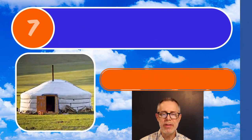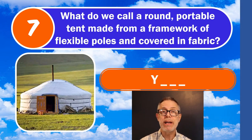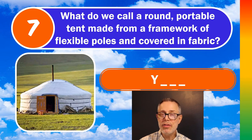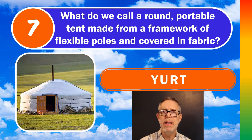Let's take a look at question number seven. What do we call a round, portable tent made from a framework of flexible poles and covered in fabric? The answer is Yurt. This particular Yurt that you're looking at right now is in Mongolia — that's where the origin of that word comes from, I believe.